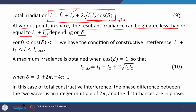The interference term contains a cosine term, and due to this the irradiance I₁ + I₂ is modulated. At some points in space the total irradiance equals I₁ + I₂, at some places it is larger than I₁ + I₂, and at others it is smaller. The places where total irradiance is larger than I₁ + I₂ show more intense light — these are the regions of constructive interference.